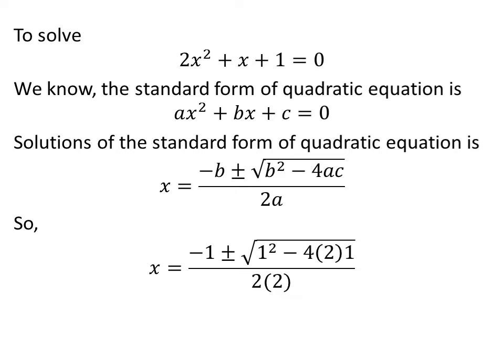So, application of the above fact gives us solutions of the quadratic equation 2 times square of x plus x plus 1 is equal to 0 are minus 1 plus or minus square root of square of 1 minus 4 times 2 times 1 upon 2 times 2.